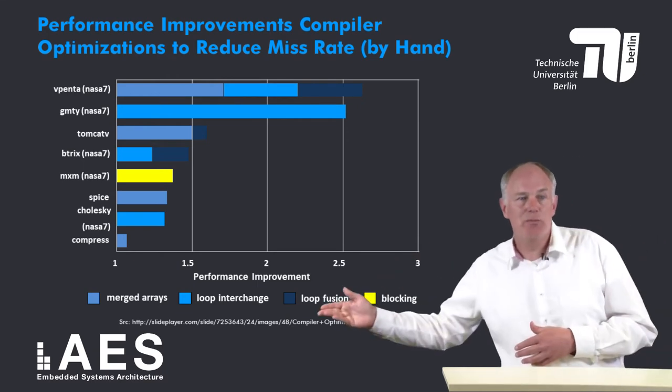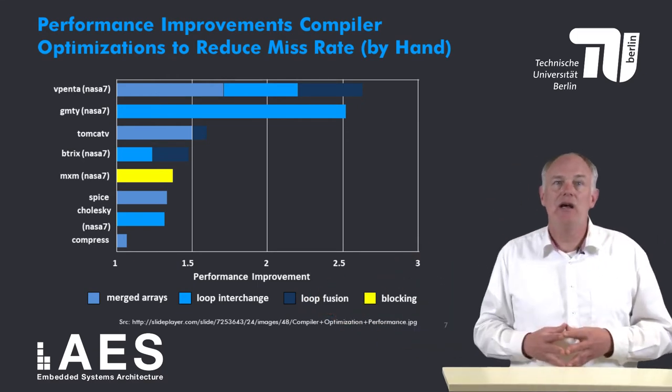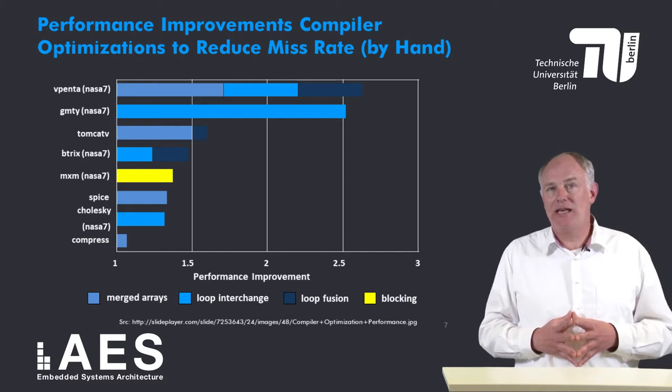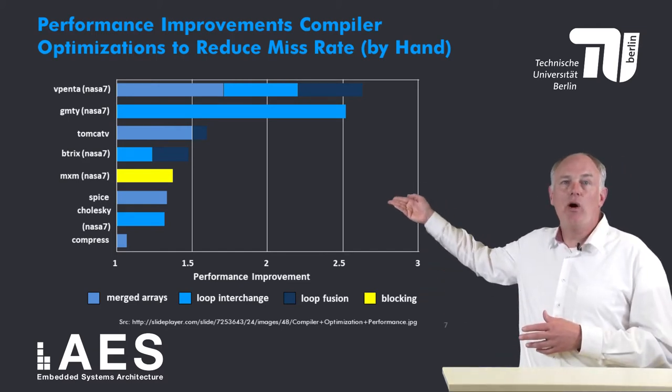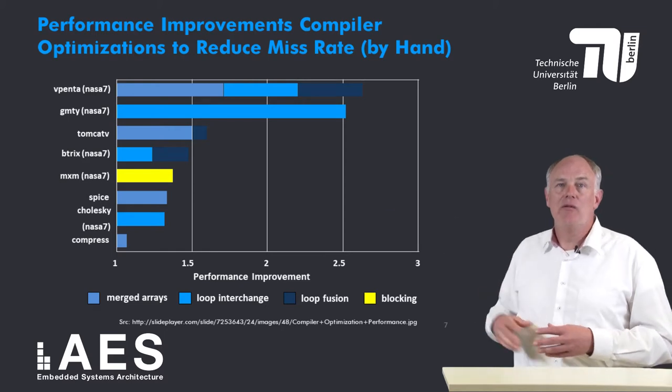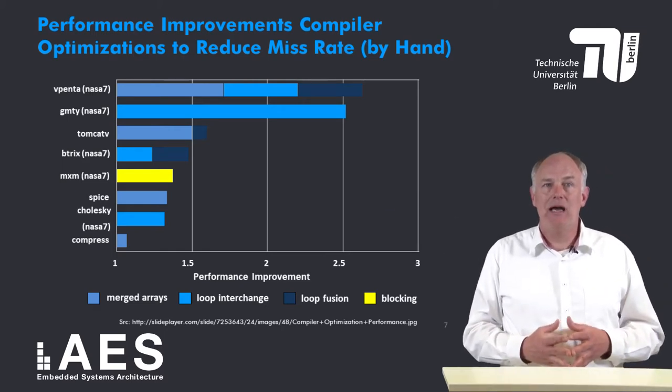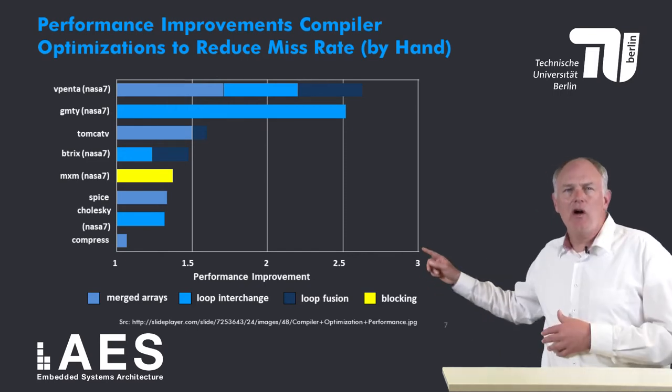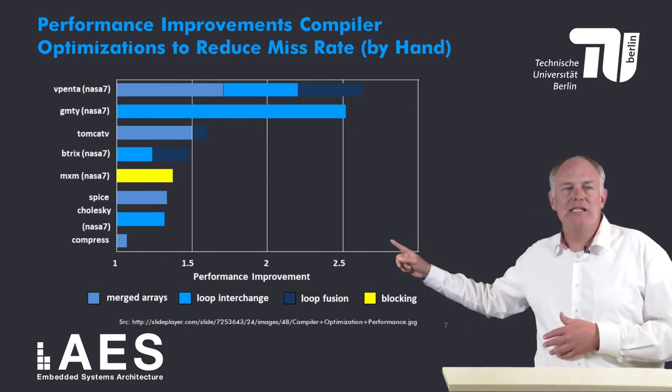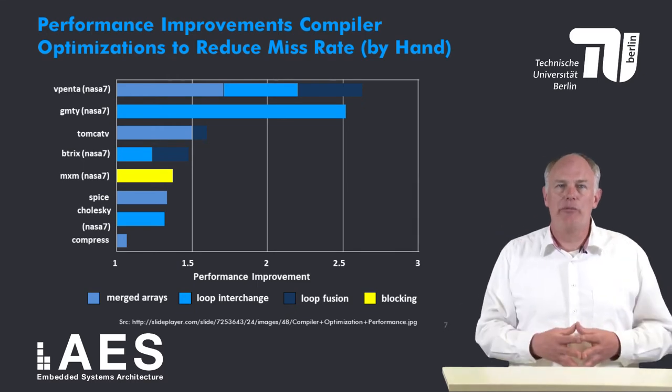It can be seen that the speedups range from very small, about 10% for the NASA 7 benchmark Compress, to very large, more than 2.5x for the benchmarks VPENTA and GMTY.